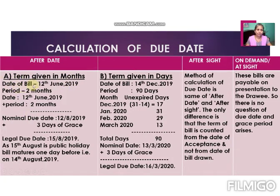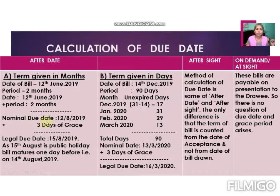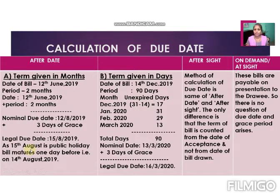For term given in months: suppose the date of the bill is 12th June 2019 and the period is two months. The period starts from 12th June; adding two months gives 12th August — that is the nominal due date. After that we add three days of grace, so the legal due date is 15th August 2019.